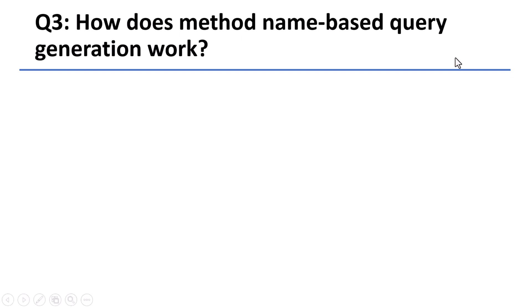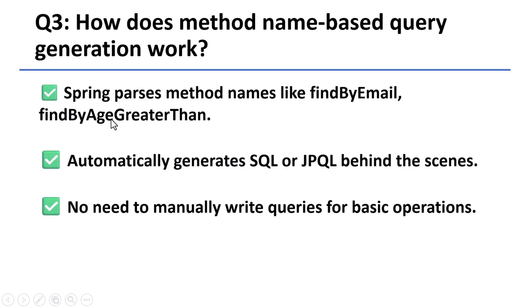In most real-world applications, developers extend JpaRepository to build repositories quickly. Question 3: How does method name-based query generation work? This is one of the coolest features of Spring Data JPA. You can simply define methods like findByEmail or findByAgeGreaterThan, and Spring will generate the right query behind the scenes. You don't need to write SQL or JPQL — it's all based on naming conventions.